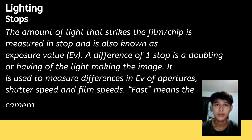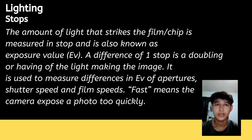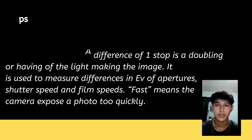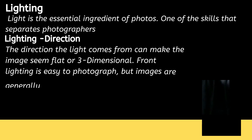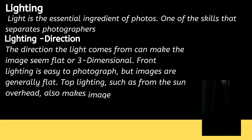The amount of light that strikes the film or chip is measured in stops, also known as exposure value. A difference of one stop is a doubling or halving of the light. Stops are used to measure differences in aperture, shutter speed, and film speeds. A fast shutter speed means the camera exposes a photo too quickly.